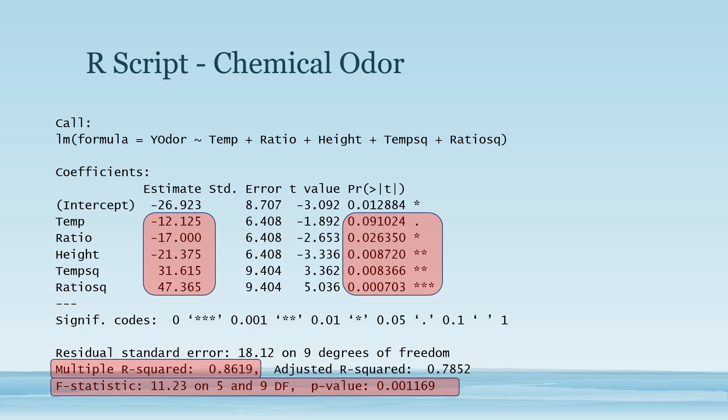Here we have three first order predictors: temperature, ratio, and height, and we have two second order predictors: temperature square and ratio square. Both temperature square and ratio square were significant.